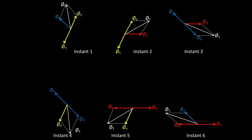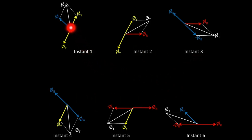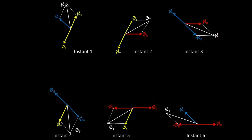Now let's take a look at every instant: instant 1, 2, 3, 4, 5, and 6. Concentrating on the phasor of total flux φT, we can see it getting inclined — and then inclined again, and again — in the clockwise direction. This is instant 1, instant 2, instant 3, instant 4, instant 5, and instant 6.